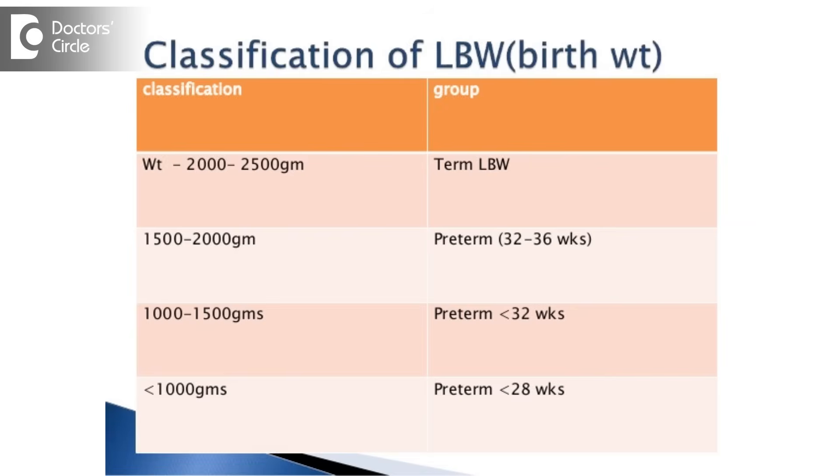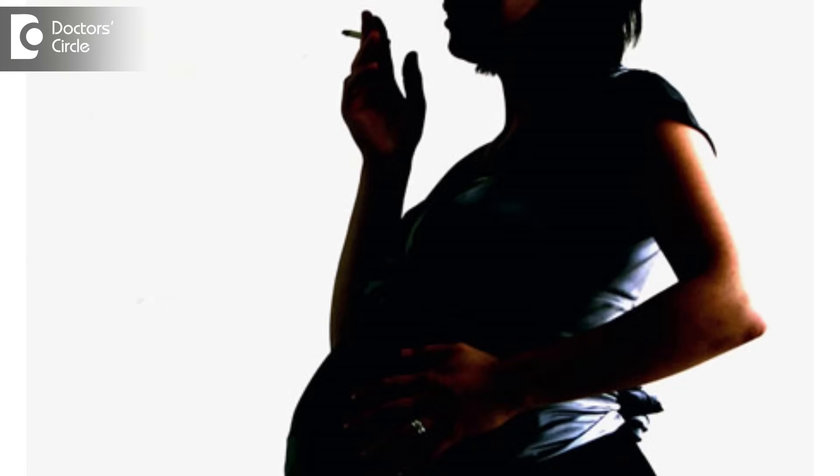There are many causes. The most important can be inherent — a low weight mother, a small built mother can have a low birth weight baby, which is called small for gestation. Other causes may be a preterm baby, born before the dates, or smoking in pregnancy.